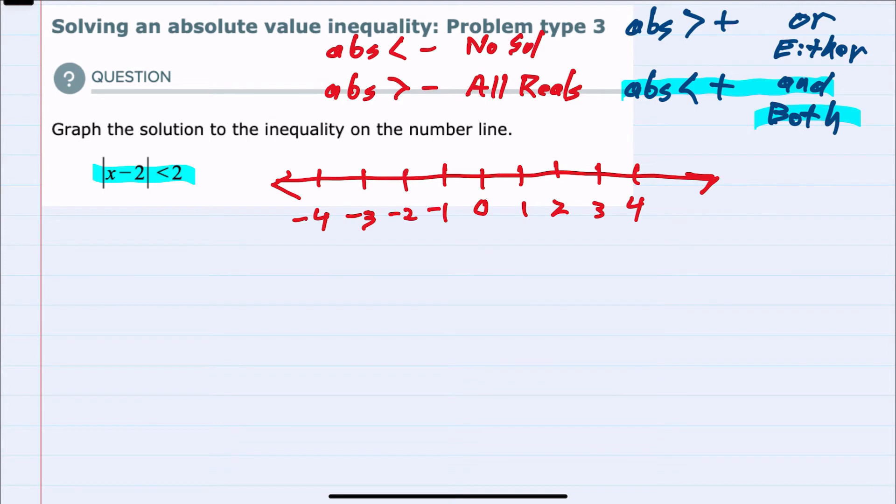Our two solutions are going to come by first dropping the absolute value: x minus 2 is less than 2. The second solution will come from dropping the absolute value x minus 2, changing the direction of the inequality, and then changing the sign on the other side. So we're now going to have two solutions and we're going to be looking for where they overlap.